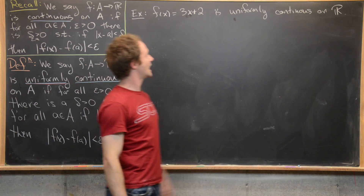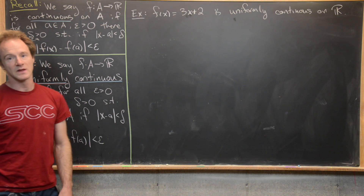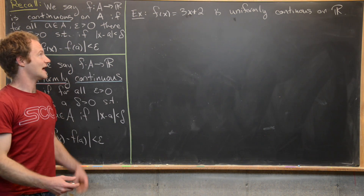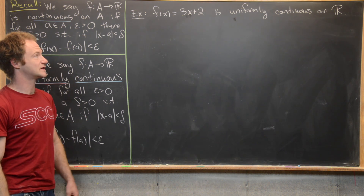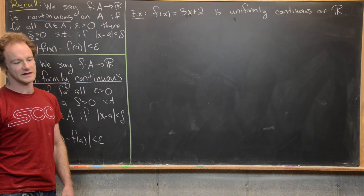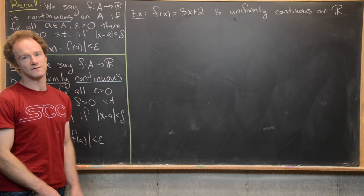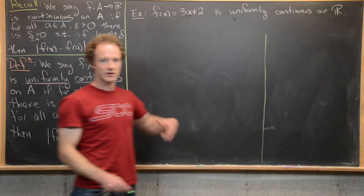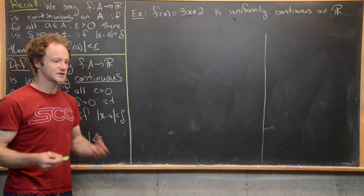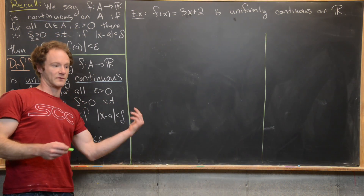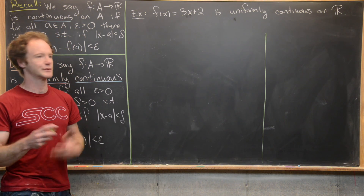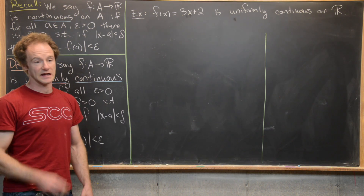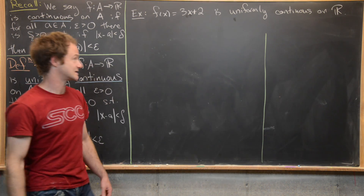Let's go ahead and look at an example, and maybe also a non-example. We're going to show that f(x) = 3x + 2 is uniformly continuous on R. We're going to work this via scratch work and then write the proof. Generally, the scratch work is done in reverse, and then writing the proof we reverse that back into the forward direction. This is a pretty standard method in a basic analysis class.